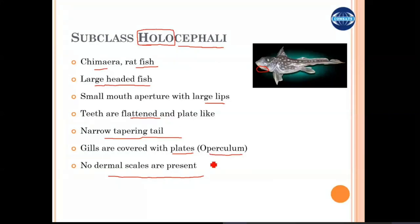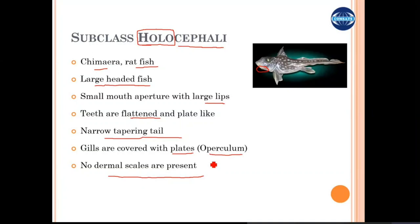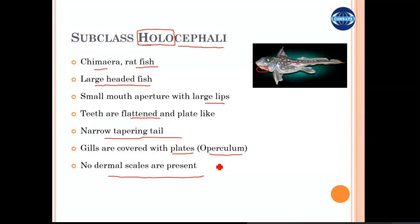The major differences between Elasmobranchii and Holocephali are: Holocephali has a narrow, pointy tail while Elasmobranchii has a large heterocercal tail. Holocephali has an operculum covering the pharyngeal slits but Elasmobranchii does not. The skin in Elasmobranchii is scaly while in Holocephali it is smooth with no scales. Teeth in Elasmobranchii are sharp and pointy for tearing, while in Holocephali they are flattened and plate-like.